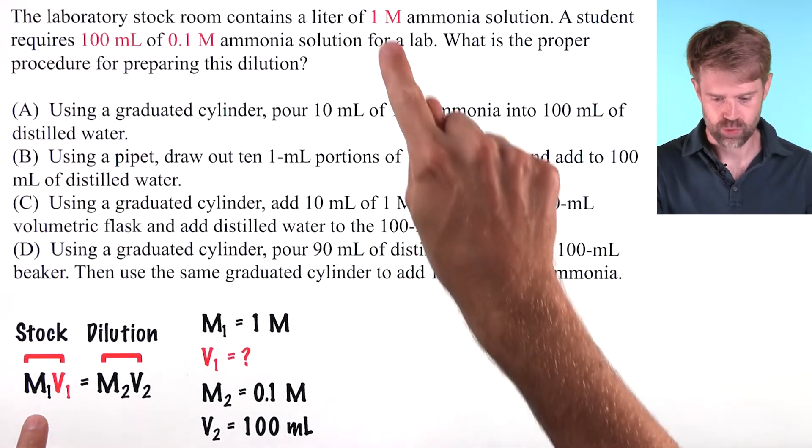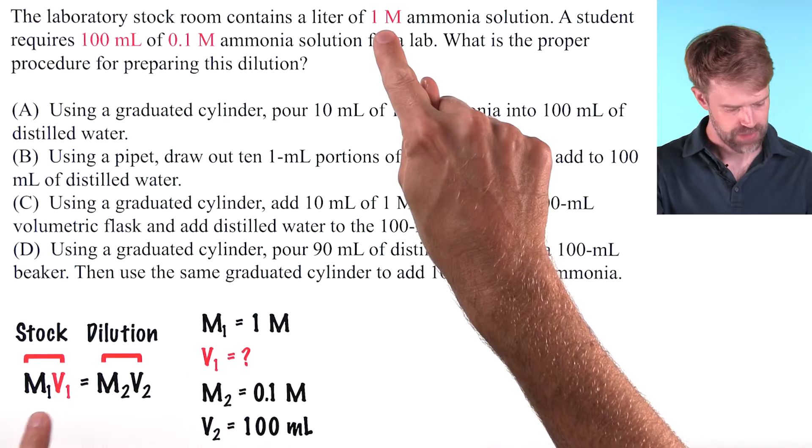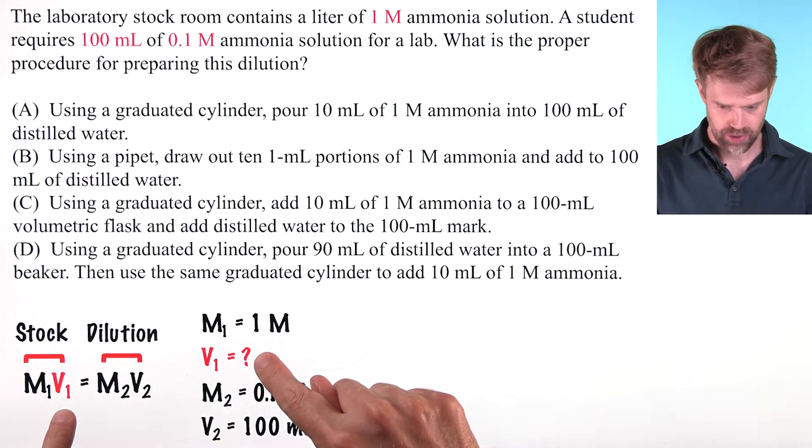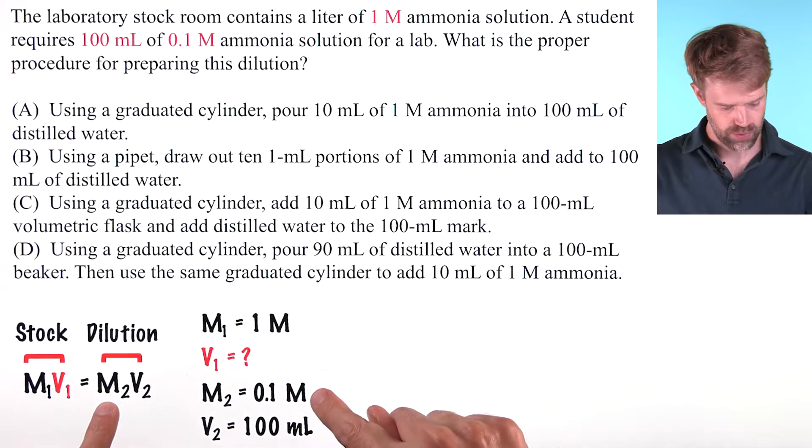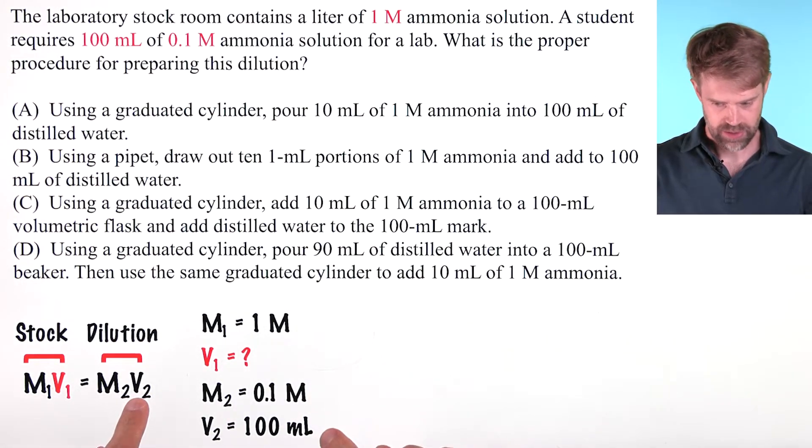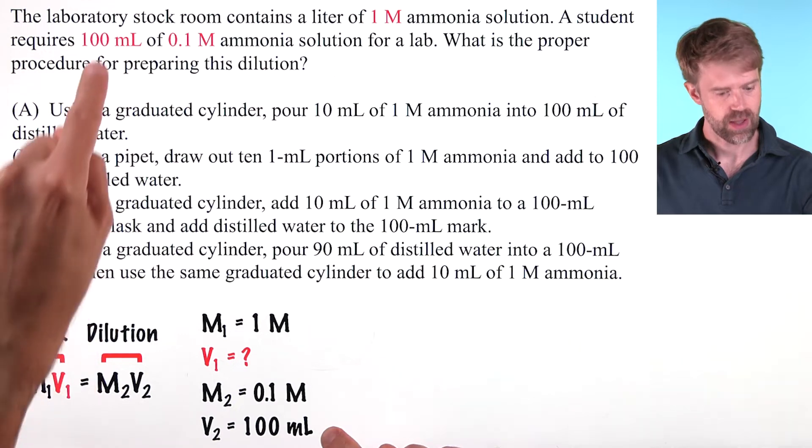So we have M1 equals 1 molar, V1 is our unknown, M2 here equals 0.1 molar, and V2 is 100 milliliters.